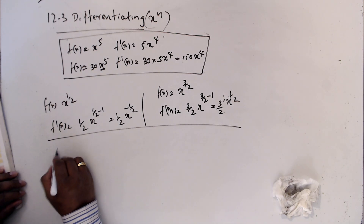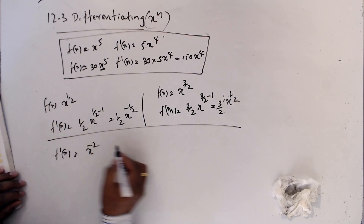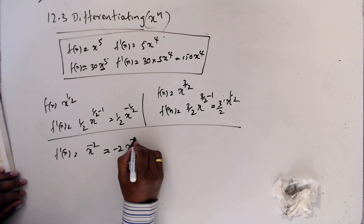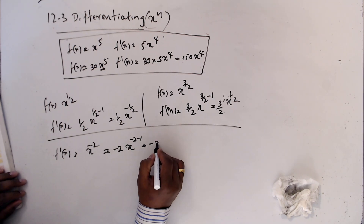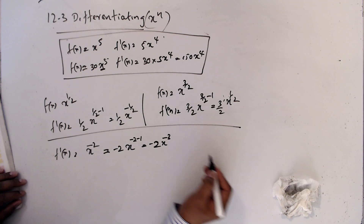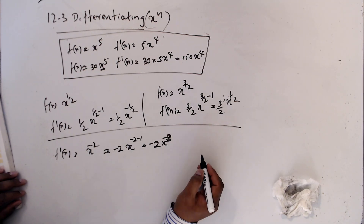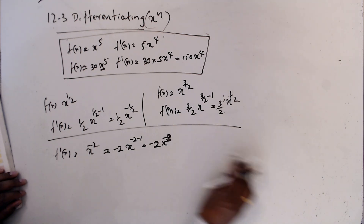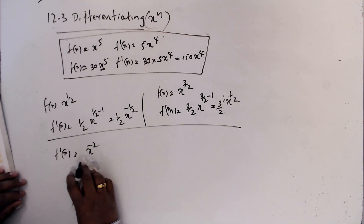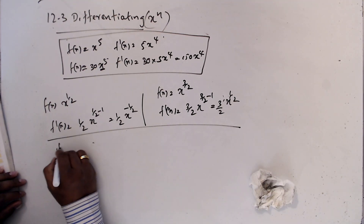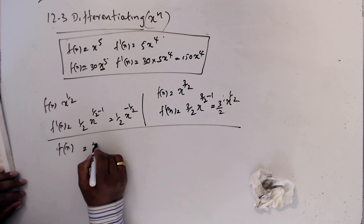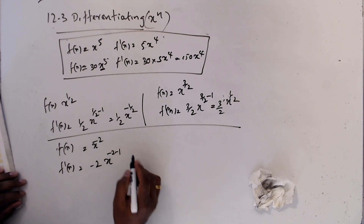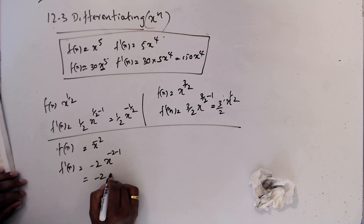Now if f(x) = x⁻², then f'(x) is the same rule: minus 2·x^(−2 − 1), which is minus 2·x⁻³.